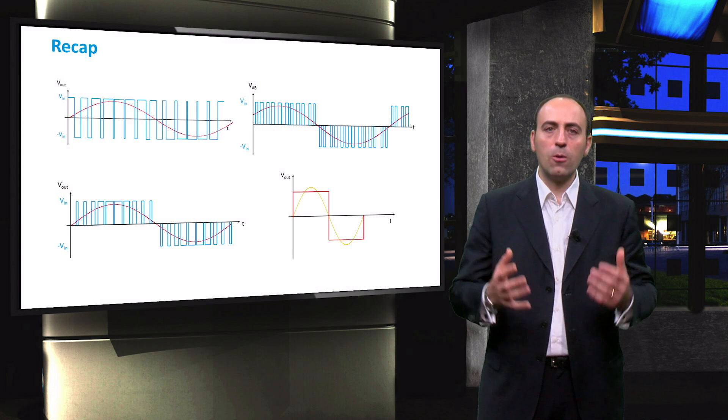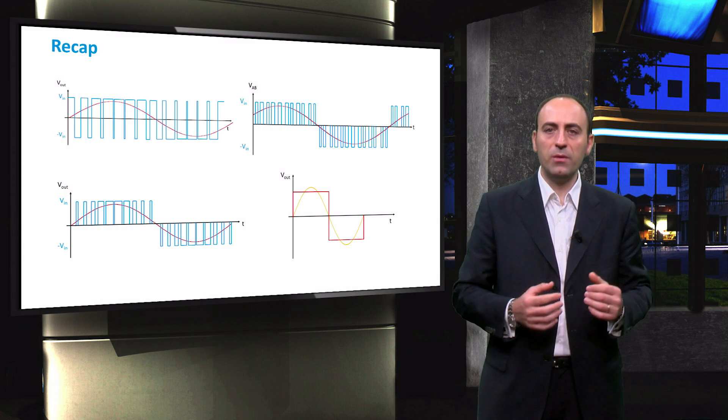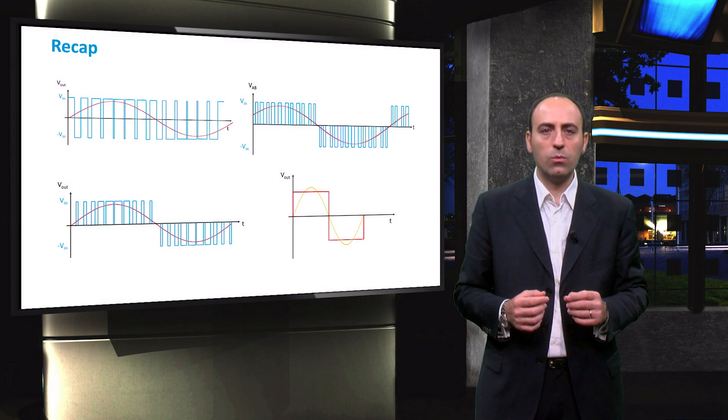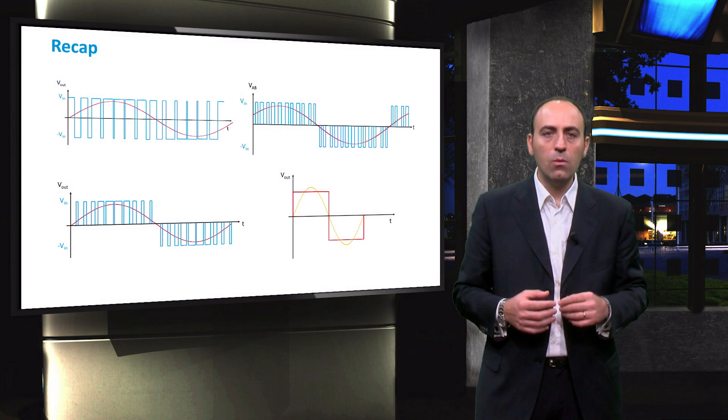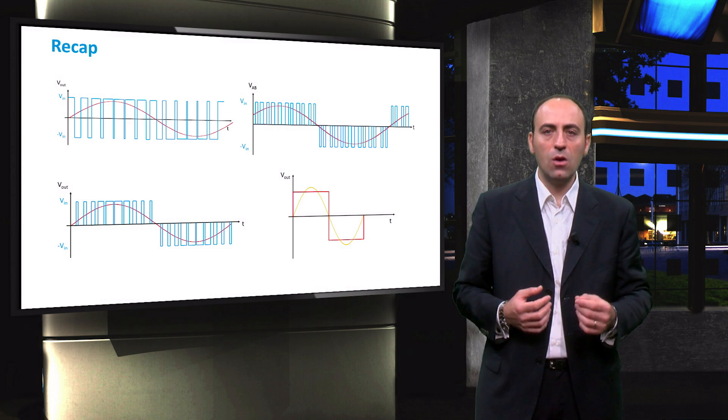The PWM can be applied also to three phase inverters to obtain three waves with a 120 degrees difference. Finally, we saw a comparison between the single phase PWM in linear mode and in squared wave mode. In the next video, we will see the overall configurations of a real inverter.